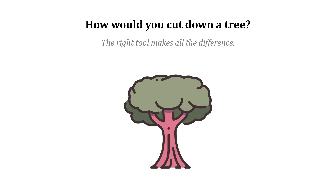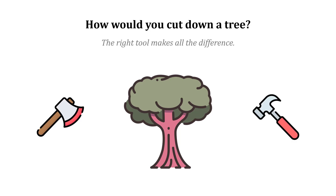So we could cut down that tree with an axe or with a hammer. With an axe, it might only take 30 minutes. With a hammer, though, it could take literally 30 days of us just banging on that tree. In this scenario, the tool makes all the difference.